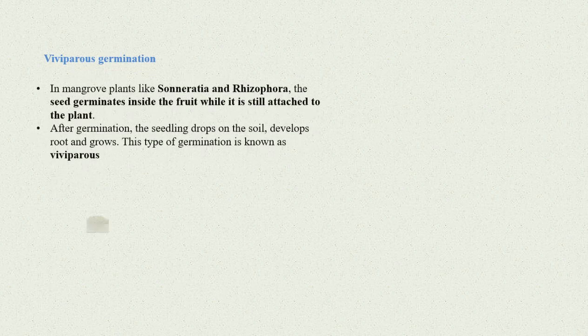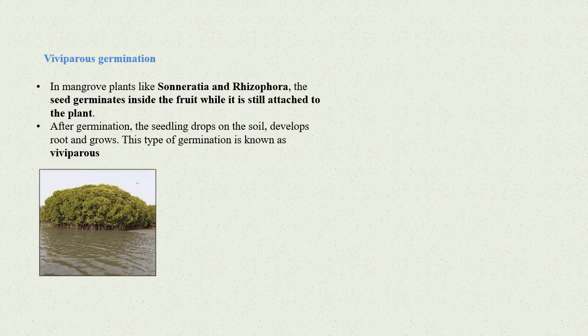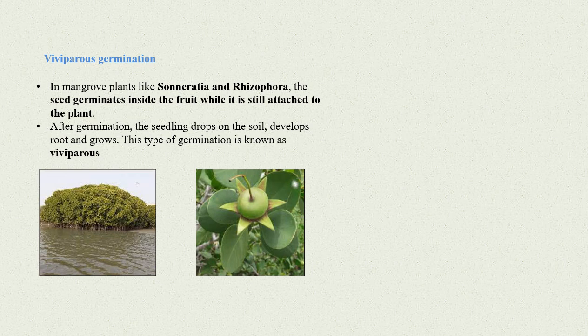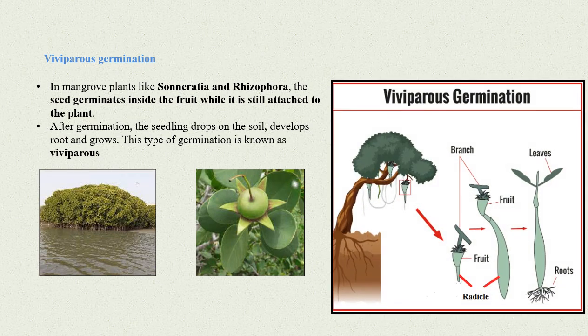Let's understand about viviparous germination. In mangrove plants like Sonneratia and Rhizophora, the seed germinates inside the fruit while it is still attached to the plant. After germination, the seedling drops on the soil, develops root, and grows.